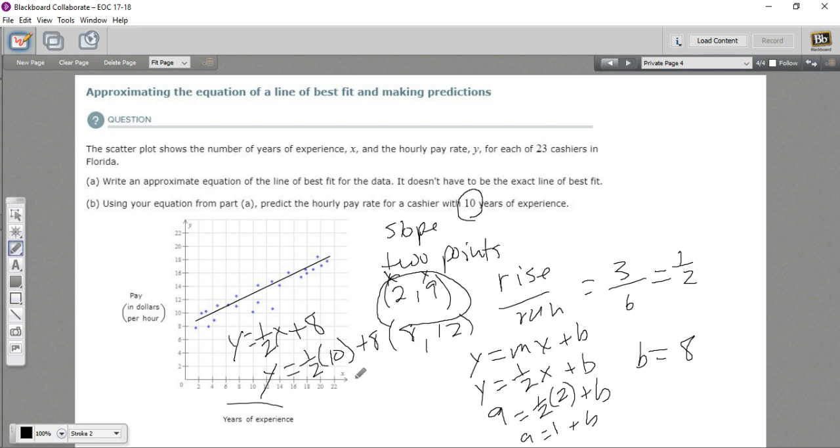1/2 times 10 is 5. 5 plus 8 is 13. So y = 13. So someone who's had 10 years of experience should be getting $13 an hour.